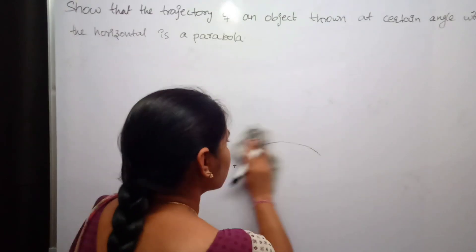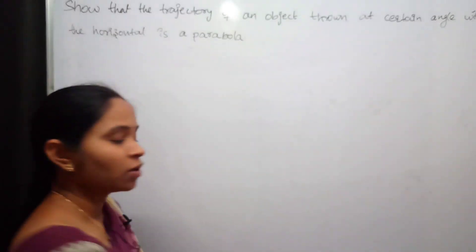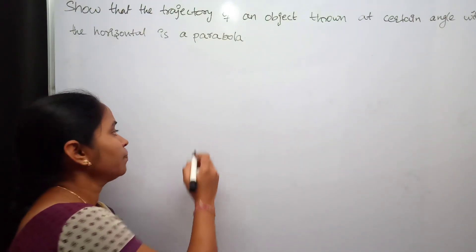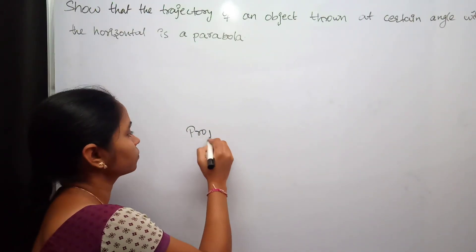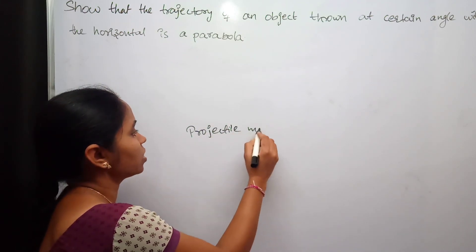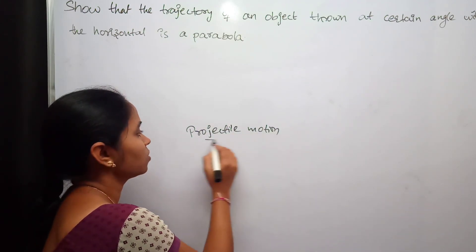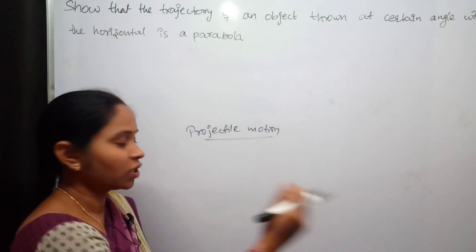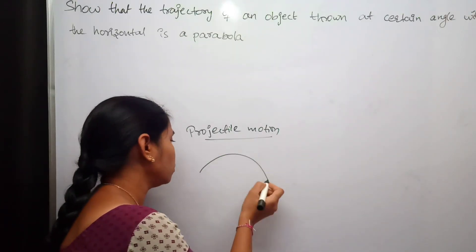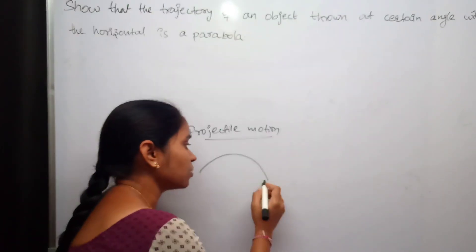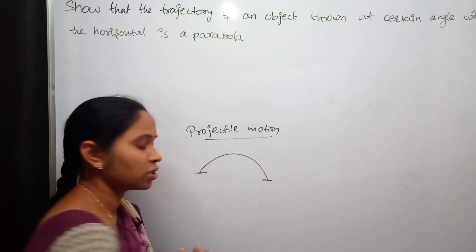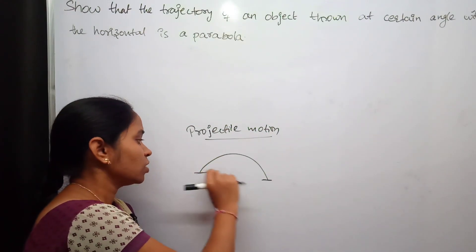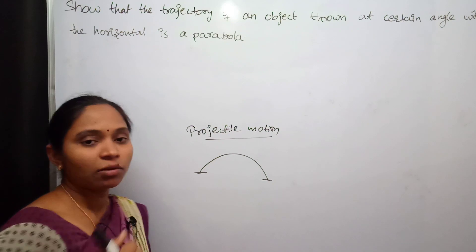Let us consider an object which is projected or thrown — it makes projectile motion. What is projectile motion? After throwing an object, it will travel through air and land at some point. This is a starting point and this is the ending point. The motion of the object between the starting point and the ending point is known as projectile motion.